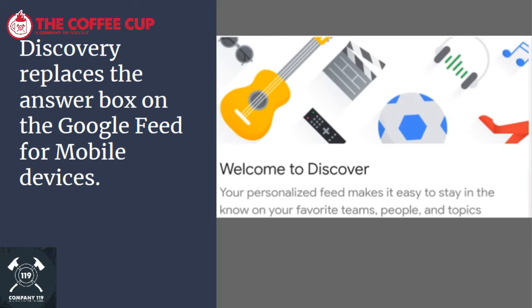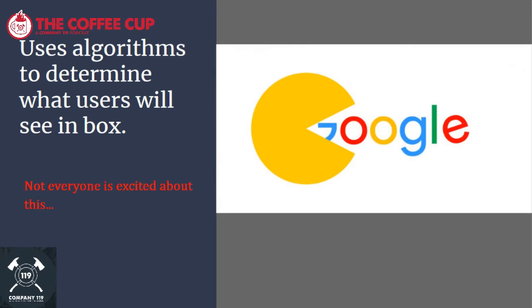Discovery replaces the answer box on the Google feed for mobile devices. If you're on your desktop version, you're still going to see the answer box just the way you always have, with some suggested sites. But when you go to Google Discovery, it's going to give you some little tiles that are going to have suggested news feeds based on what you've done in the past. It's going to use algorithms to determine what users will see in that box. Not everybody is crazy excited about this. It's going to use a big broad pool of options and potential news items, and based on what you've done in the past, it's going to pick and select them for you. They're hoping it gets more intuitive and picks news items really close to what you want to see — they want to predict the exact content you want. For now, it's a little broad.